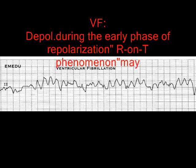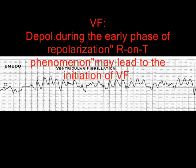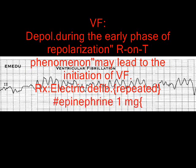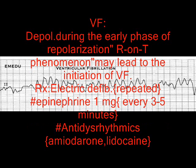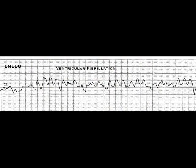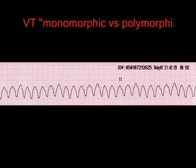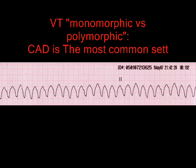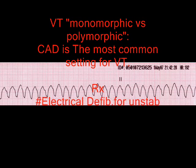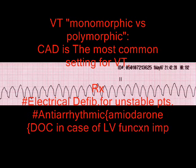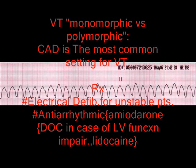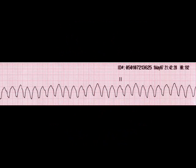A PVC during the early phase of repolarization, or the so-called R-on-T phenomenon, may lead to initiation of VF. Treatment is of course by electrical defibrillation, epinephrine, and anti-arrhythmic drugs such as amiodarone and lidocaine. VT includes both monomorphic and polymorphic forms. Coronary artery disease is the most common setting for VT.